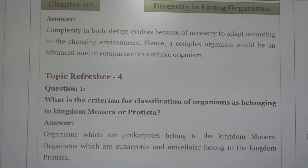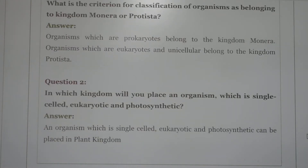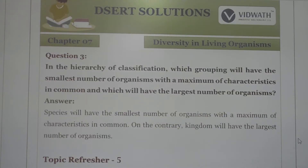Next question: what is the basis for classification of organisms? Organisms that are unicellular and have no organized nucleus belong to the kingdom Monera. Organisms that are unicellular and photosynthetic can be placed in the Protista kingdom. Next question: in which kingdom will you place an organism which is single-celled and photosynthetic? The answer is it can be placed in the Protista kingdom.